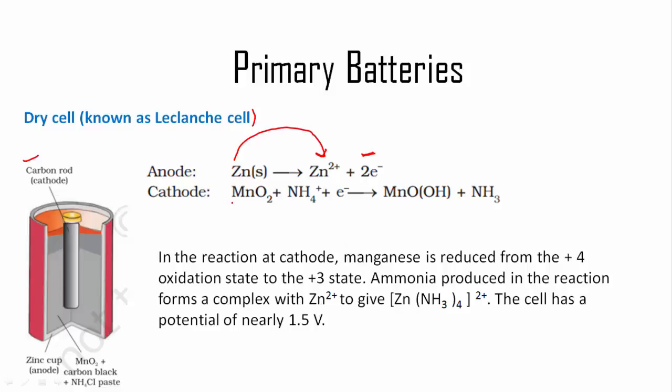In this reaction at cathode, manganese is reduced from the +4 oxidation state to +3 oxidation state. Ammonia produced in the reaction forms a complex with Zn²⁺ to give [Zn(NH₃)₄]²⁺.